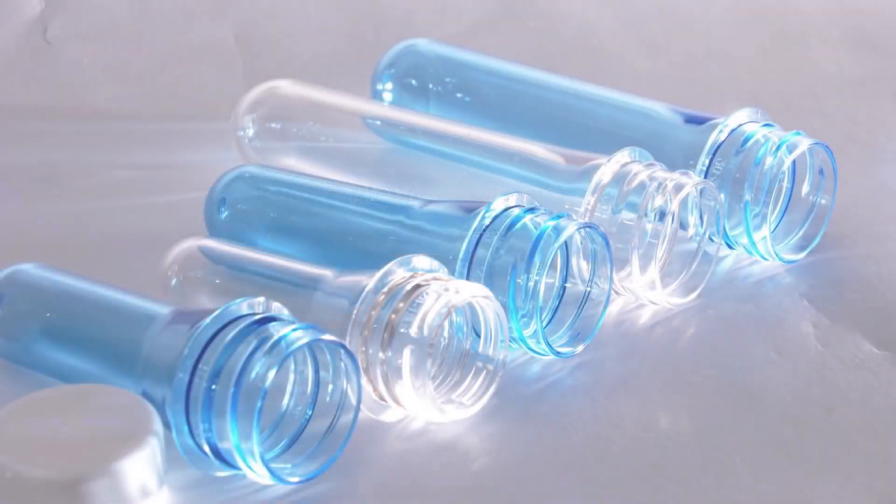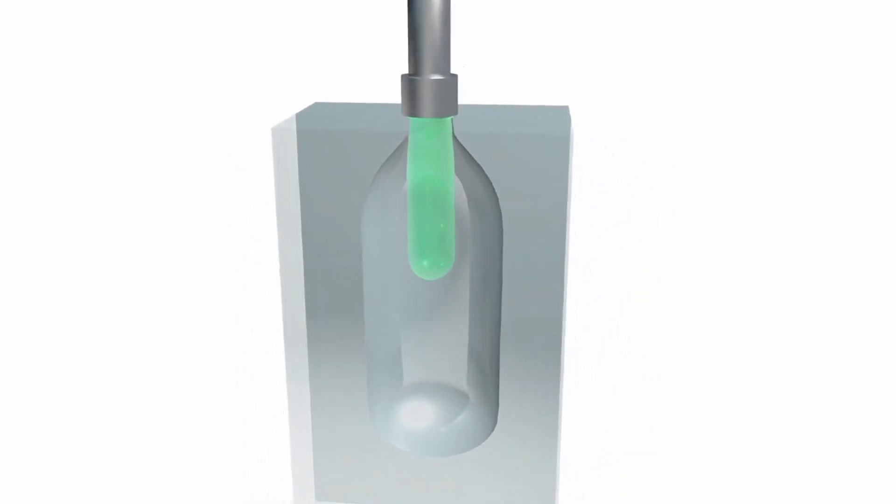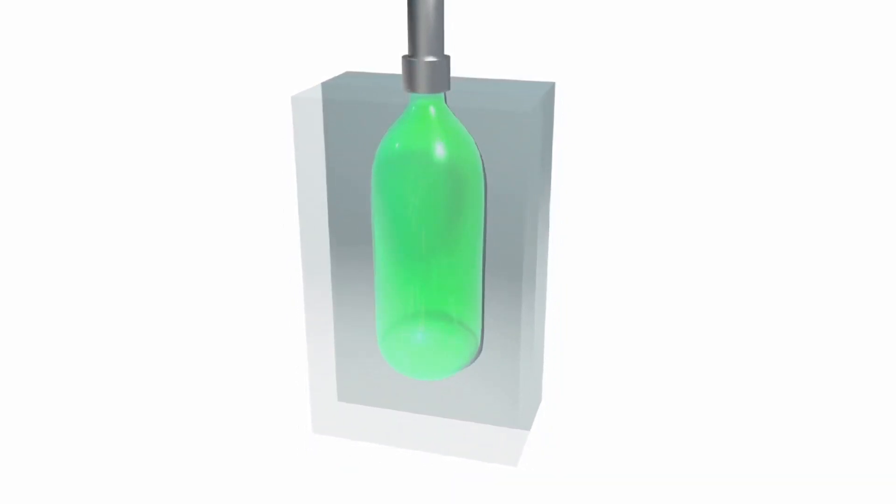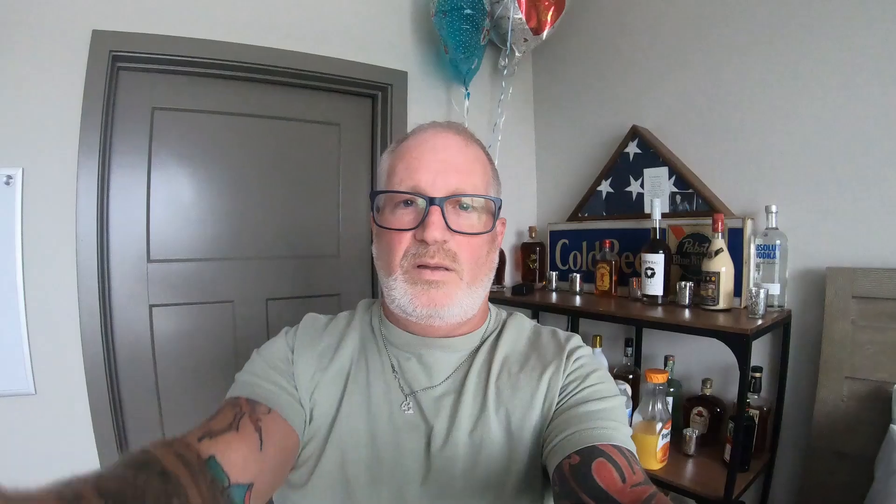For PET blow molding, bottles are first created in a test tube shaped injection molded preform, and then in a separate operation reheated and blown into their final shape. This two-stage process creates bottles that we as consumers know to be thin-walled yet capable of containing gaseous carbonated beverages without losing pressure or exploding, even if they are dropped.